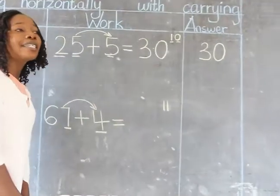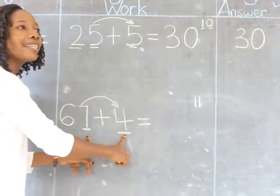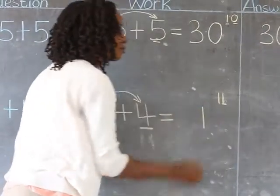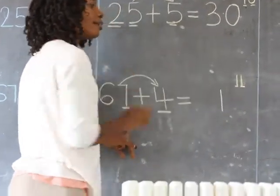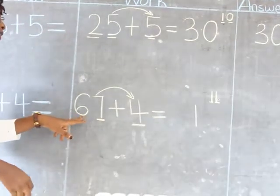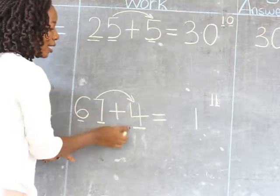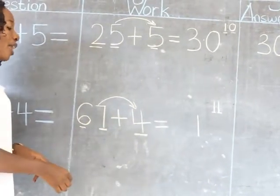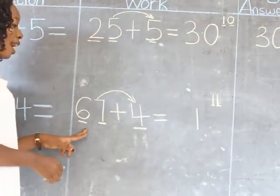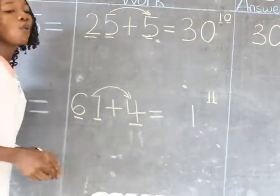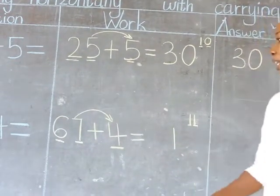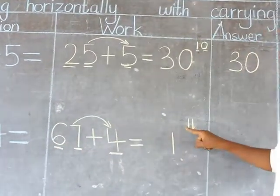We were adding numbers in the ones place, and this digit is in ones, so I'm writing 1 in the ones place. Then I carry this 1 to the tens. In the tens position I have the number 6, so I'm going to add 6 and the 1 which I carried over from the ones. I count 6 building blocks first, then 1 building block.